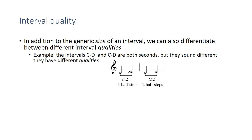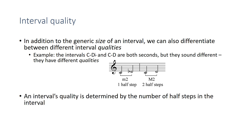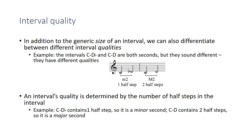The distance from C to D-flat is one half step, and C to D is two half steps, so they have different qualities. We determine the interval's quality by looking at the number of half steps that it contains. C to D-flat has one half step, and we call that a minor second. C to D has two half steps, and we call that a major second. They're both seconds — one has the quality of minor, and one has the quality of major.